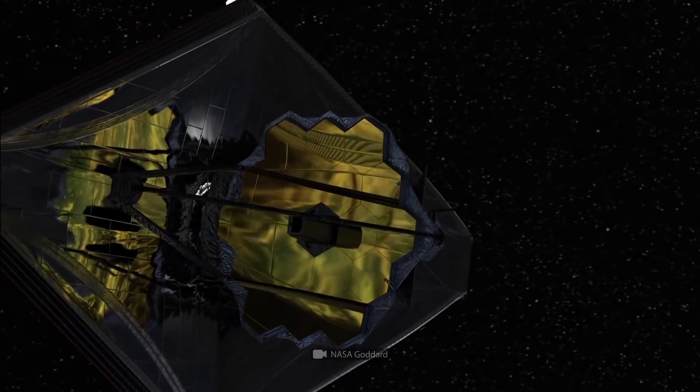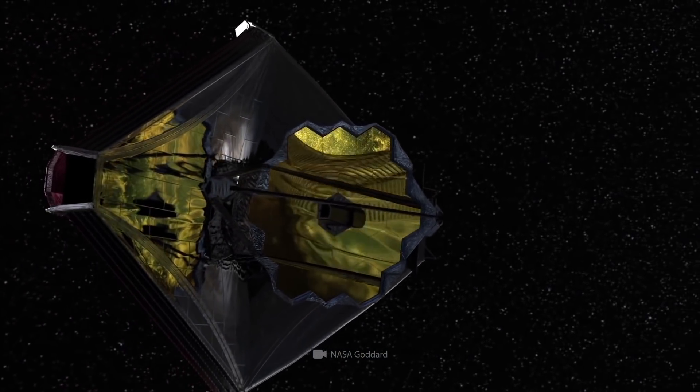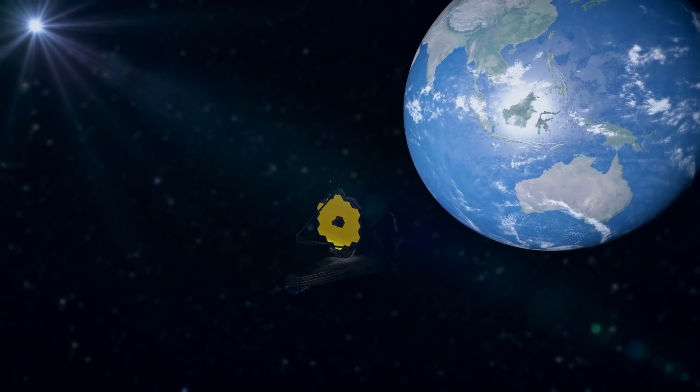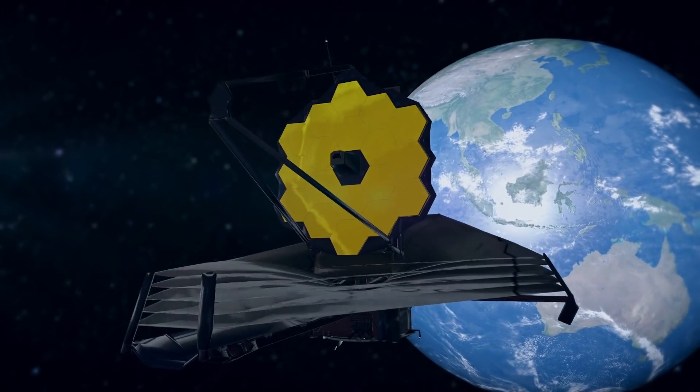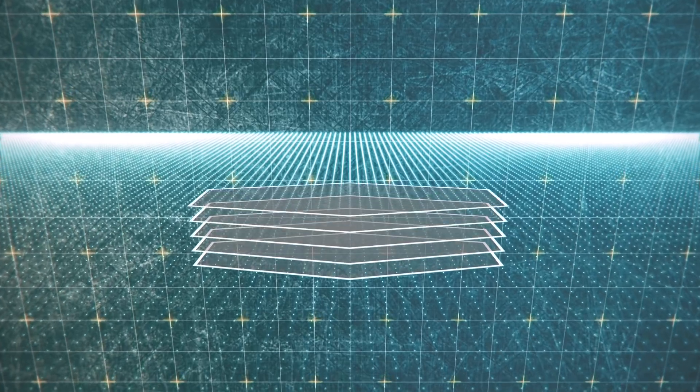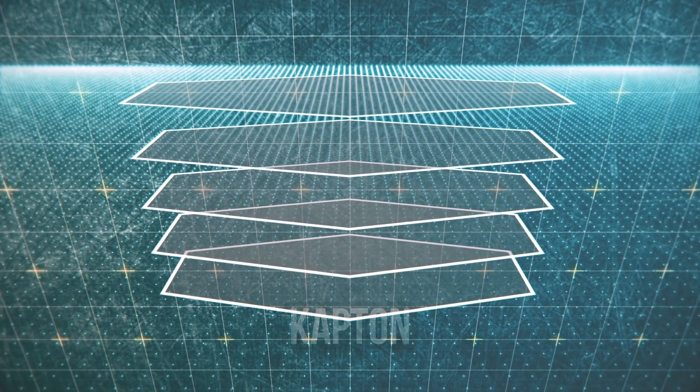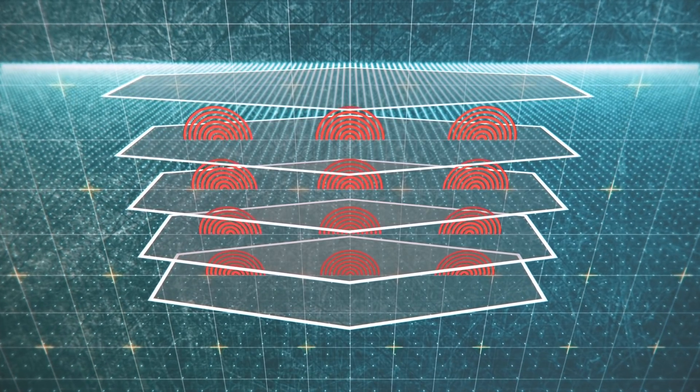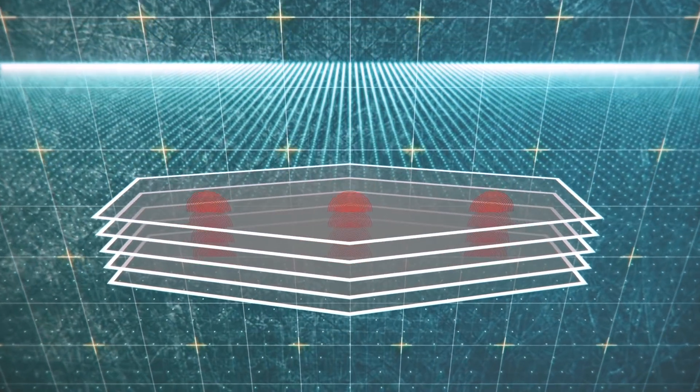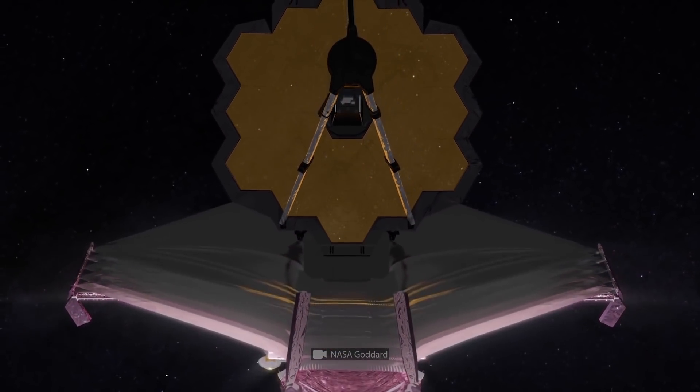The light collected by this mirror will enable the Webb to get super clear images. But for that, it must remain cold and free from the heat of the Earth and the sun. That's why the engineers fitted the Webb with a massive heat shield. It's made of an aluminum coating and five layers of Kapton, a material for thermal insulation. The shield will protect the main mirror and the telescope's scientific instruments from heat flows and space radiation. It will also keep the temperature of the mirror and the instruments below 200 degrees Celsius.